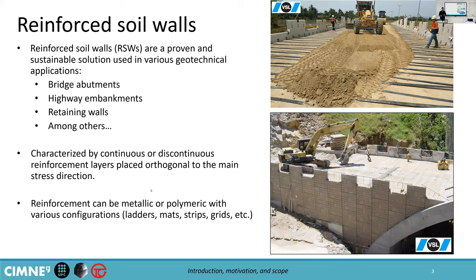This extensible or inextensible definition is with respect to the extensibility of the reinforcement with respect to the soil. For reinforcements, we can have strip elements, like the superior picture, or we can have ladder elements, which are made of steel in the bottom picture. These reinforcements, besides being polymeric or steel, can be of different configurations — in strips, in ladders, in grids, or in mats.